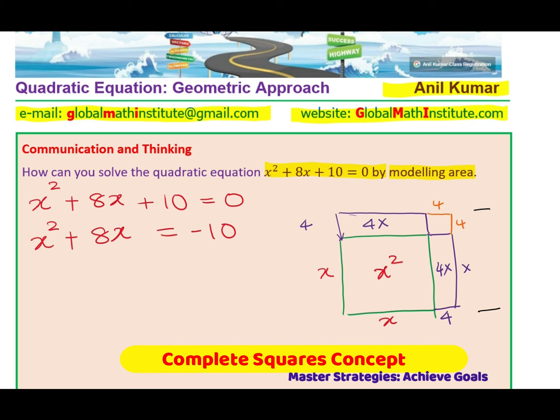It is x + 4. So it is x + 4, one side of the square, the other side will be x + 4. So we have x + 4 sides of a square. We have completed the square. Do you see that? That is the concept of completing squares.